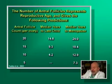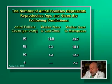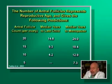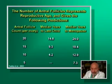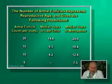Once you get down to only five antral follicles per ovary, which is a total count of 10, you're very, very unlikely to still be fertile. You may be able to get pregnant with IVF, but you're unlikely to be fertile naturally. In fact, you're likely to go through menopause in about seven or eight years once your count is down that low. These are just averages, but they show some basic guidelines you can go by.